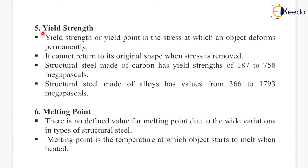Next is yield strength. Yield strength, or yield point, is the stress at which an object deforms permanently — it cannot return to its original shape when stress is removed. Structural steel made of carbon has a yield strength of 187 to 758 megapascals, while structural steel made of alloys has values from 366 to 1793 megapascals.